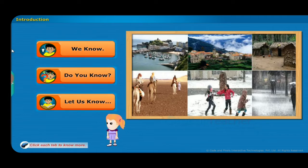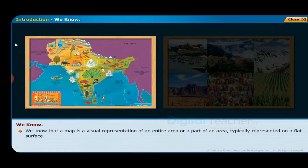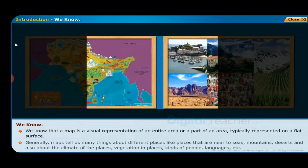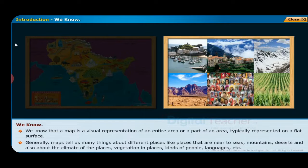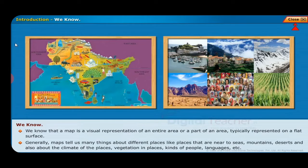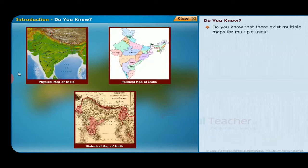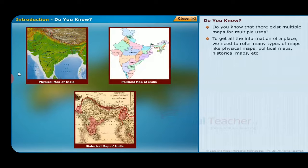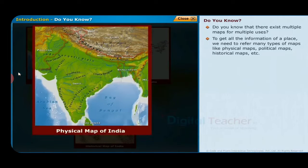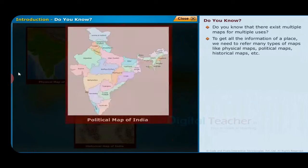Introduction: before entering into the chapter, follow the instructions shown on the screen and click each tab to know more. A map is a visual representation of an entire area or a part of an area, typically represented on a flat surface. Generally maps tell us many things about different places — like places near seas, mountains, deserts, climate, vegetation, kinds of people, languages, etc. There exist multiple maps for multiple uses; to get all the information of a place we need to refer to many types of maps like physical maps, political maps, historical maps, etc.